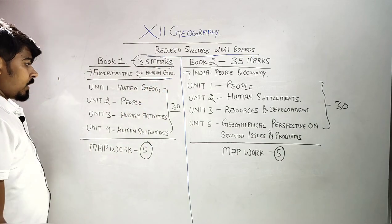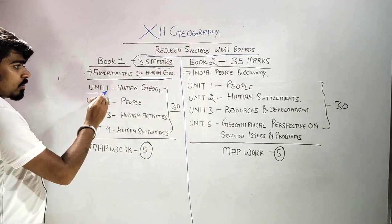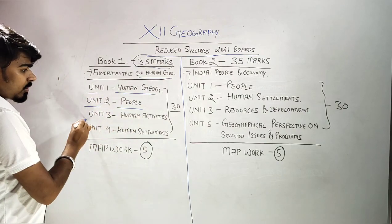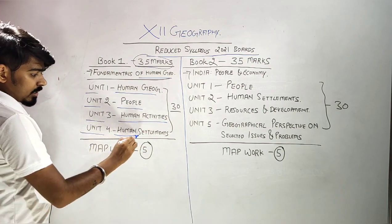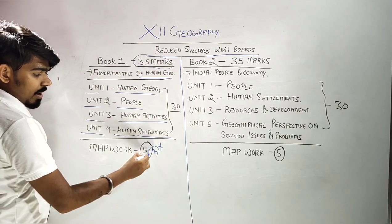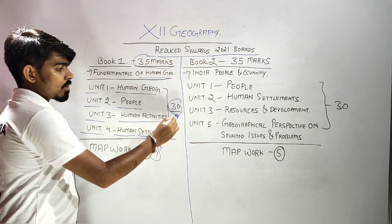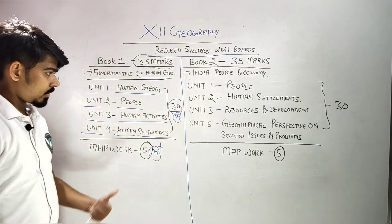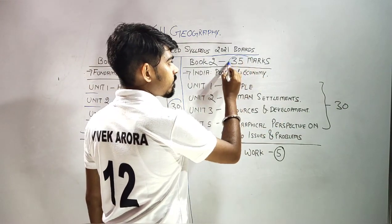Fundamentals of Human Geography में चार units हैं: Unit 1 - Human Geography, Unit 2 - People, Unit 3 - Human Activities, Unit 4 - Human Settlements। इसके अलावा 5 marks का map आएगा। तो Book One से 30 marks की theory और 5 marks का map ठीक है।